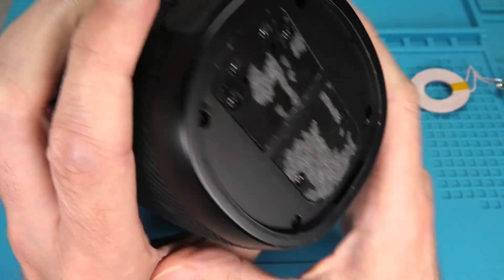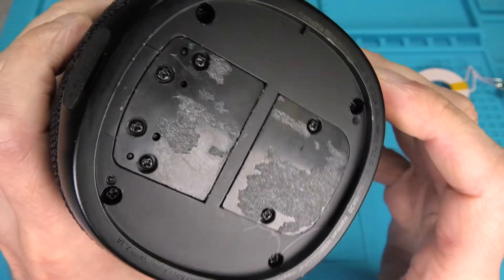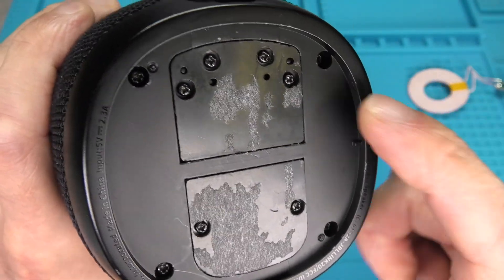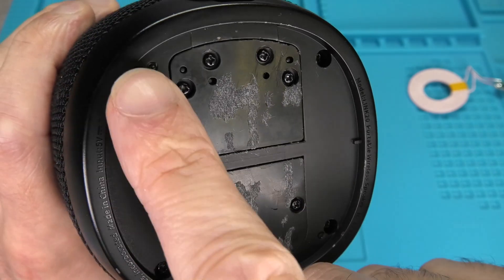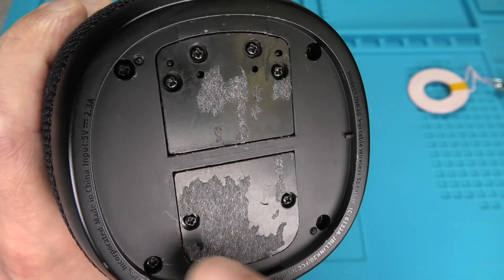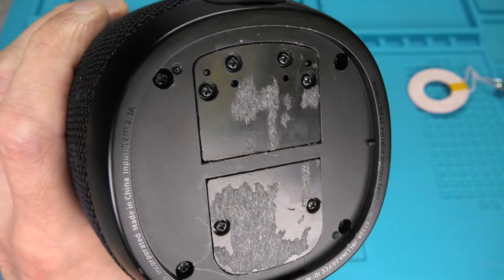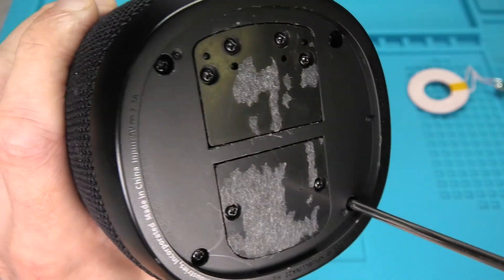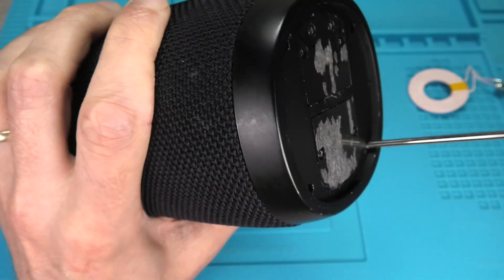Then right underneath there we are going to see a whole bunch of small phillips screws. And we are going to remove the four in the corner here, the bigger ones. So those four we are going to remove and the other six screws that are holding down those little covers we are going to leave those in place. We are not going to have to open those at all.